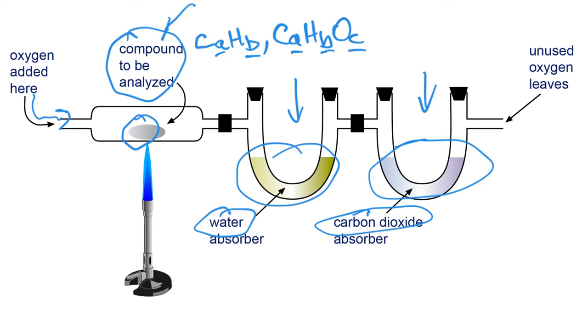You can measure the mass of the tubes before and after the reaction to figure out the mass of the water and the carbon dioxide produced. You would also know the mass of your compound to be analyzed, and we can use those numbers to figure out what the empirical and molecular formula is of our compound that we burned.